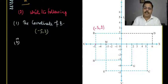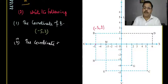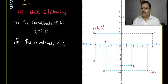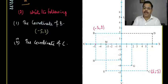The second part asks for the coordinate of C. Looking at the graph, C is at a distance of 5 along the x-axis in the positive direction, and 5 along the y-axis in the negative direction. So the coordinate of C is (5, -5).